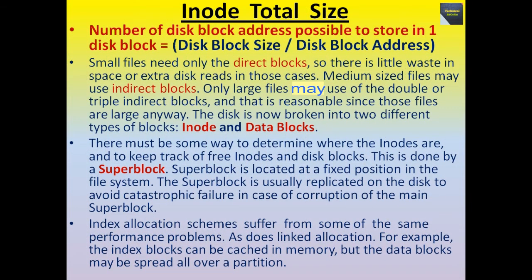Now we talk about inode total size. The number of disk block addresses possible to store in one disk block equals disk block size divided by disk block address size. Small files need only the direct blocks, so there is little waste in space or extra disk reads. Medium sized files may use indirect blocks. Only large files may use double or triple indirect blocks, and that is reasonable since those files are large anyway.